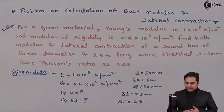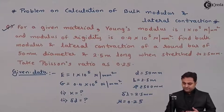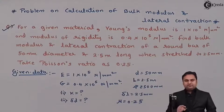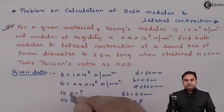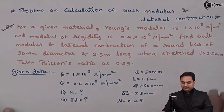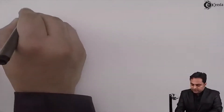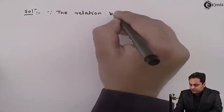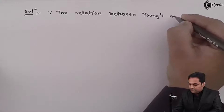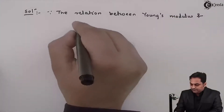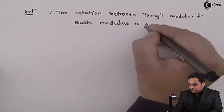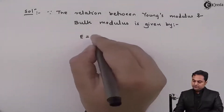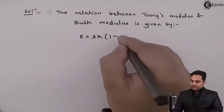To calculate bulk modulus, we use the relation between Young's modulus E and bulk modulus K. Since E and μ values are given, we apply the relation: Young's modulus E equals 3 times bulk modulus K multiplied by (1 minus 2μ).